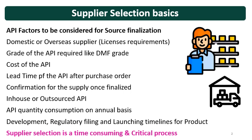Then consider in-house or outsourced API. Sometimes the company making the finished formulation has their own manufacturing facility for the API, in which case the API is cost effective and the generic product will also have a competitive edge in the market, because for generics, cost is a very important factor. That's why API cost becomes very crucial. Then consider the API quantity consumption on an annual basis — you have to give the supplier confirmation of what the annual consumption will be, on the basis of the market volume requirement for the product.